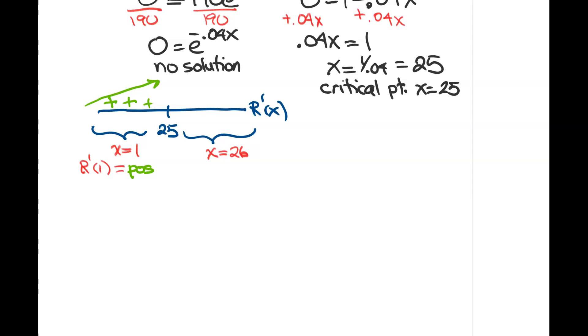And the same thing for 26. I'm going to take 26 and plug it into my derivative. I think a calculator is going to be your best way to do that. When you do that, you get a negative value, which means negative derivative, my graph's decreasing. So if your graph's decreasing on the right and increasing on the left, then that tells me that I have got a max at the x value of 25. So my revenue will be a max at 25.